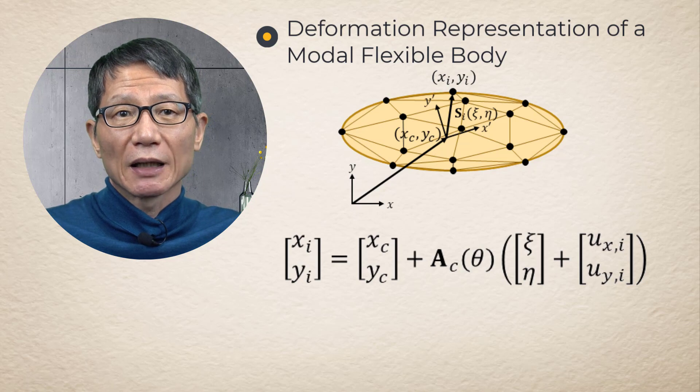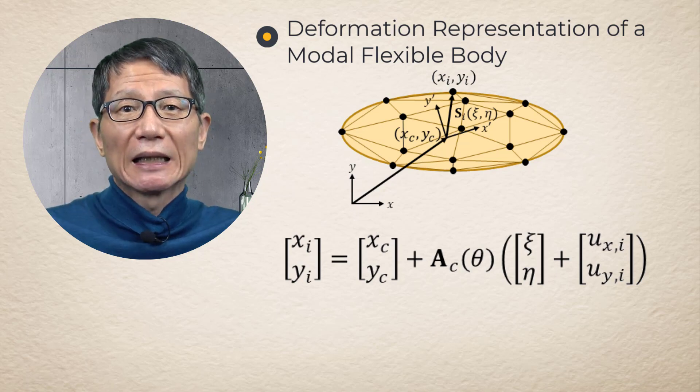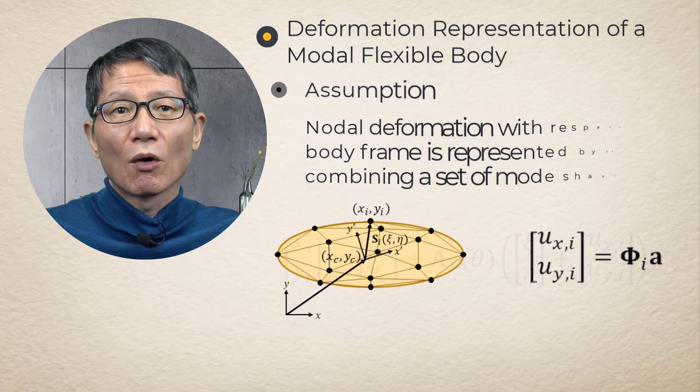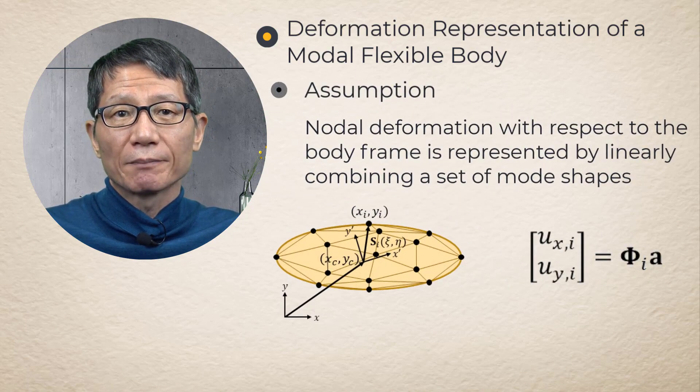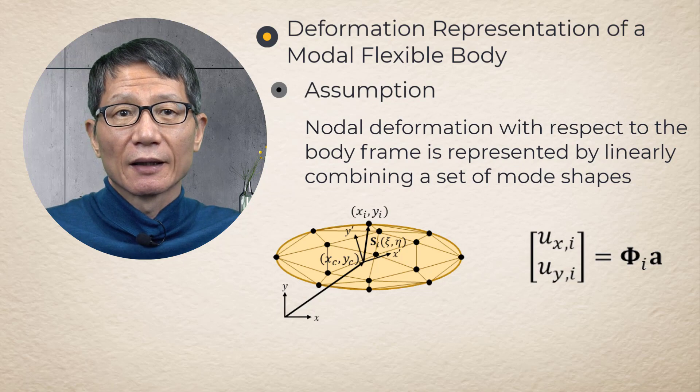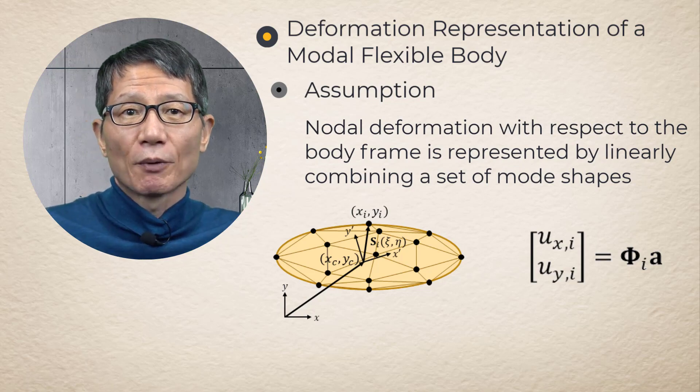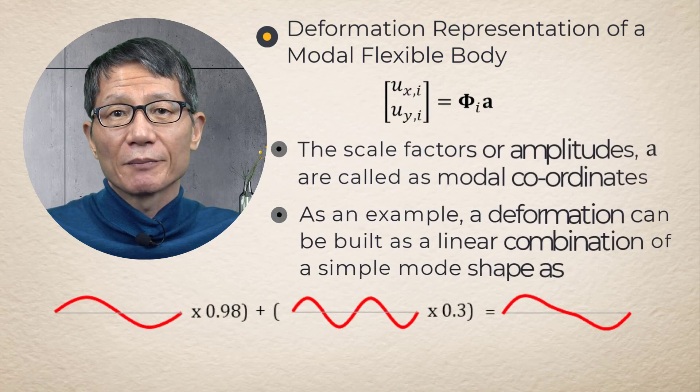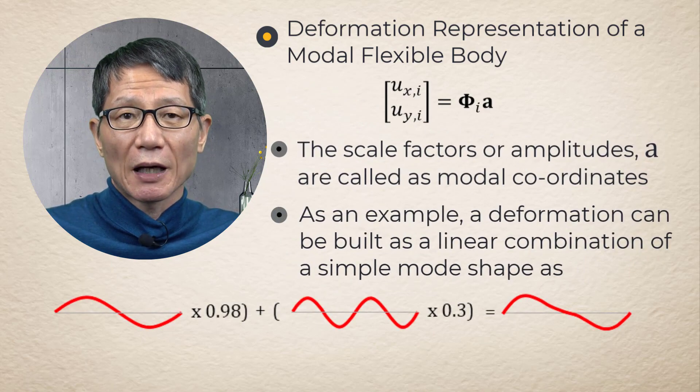Deformation U' is represented by linear combination of mode shapes as follows. We call the coefficient of the mode shape modal coordinates. As an example, a deformation shape can be represented in a pictorial form by linear combination of mode shapes as follows.